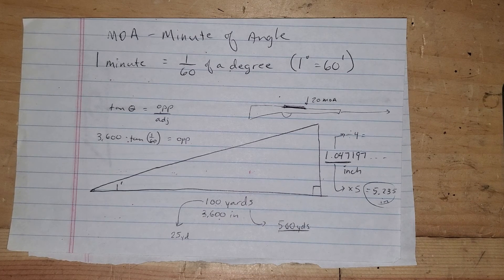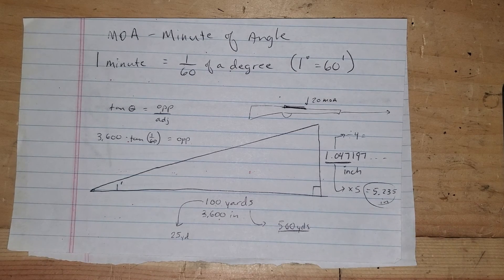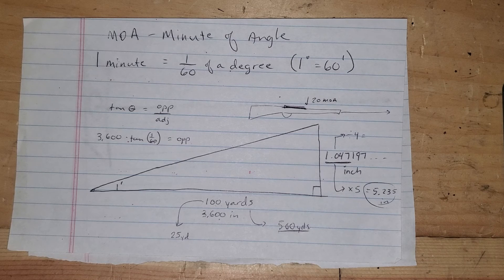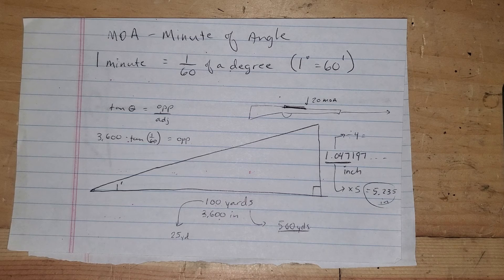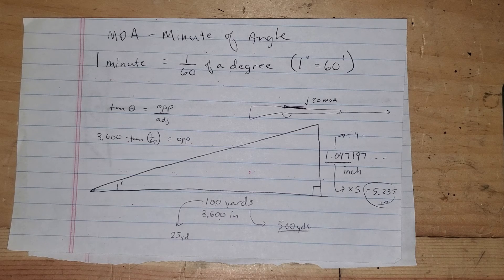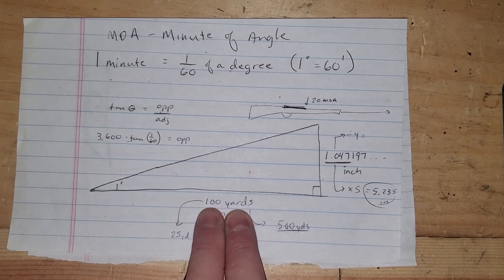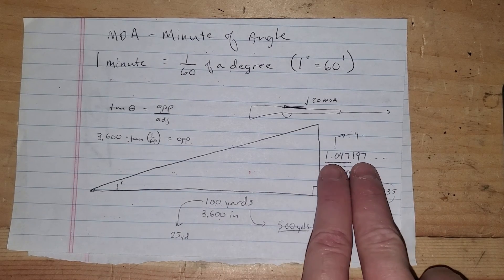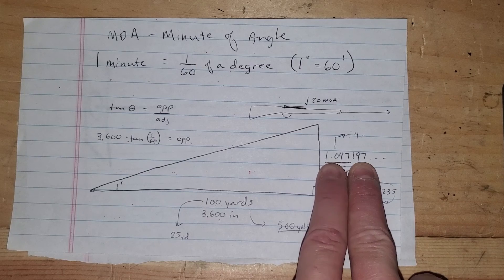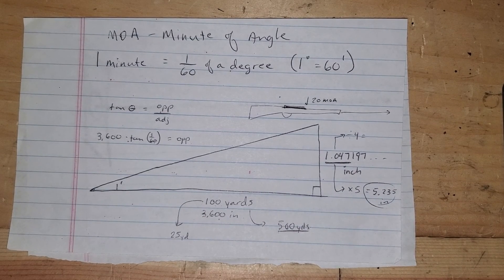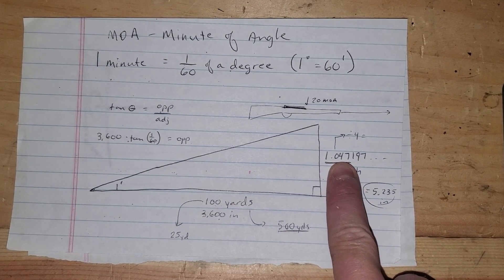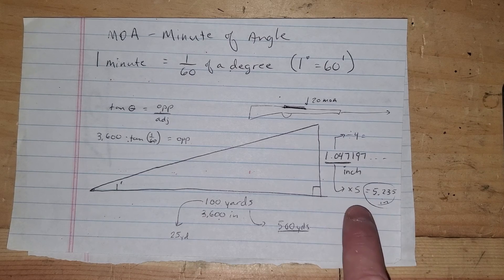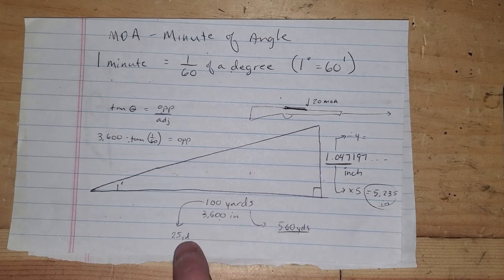So anyway, guys, I hope this helps. It's an interesting thing for me. There's a lot of geometry and trigonometry in all of this, and most of your scopes are one quarter MOA per click. So four clicks makes a minute, and a minute makes about an inch if you're at 100 yards. So anyway, remember that number, 1.047, and you can multiply or divide depending on your range.